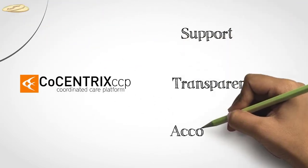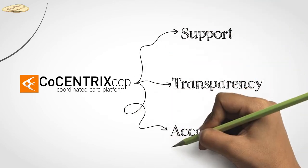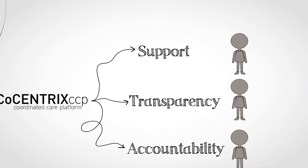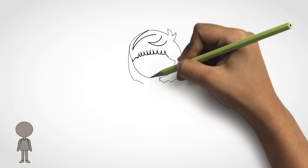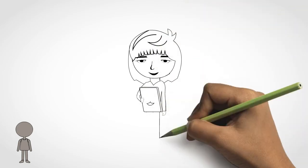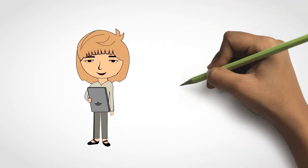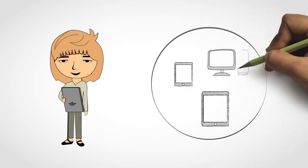transparency, and accountability among all those who contribute to Jane's care plan. Jane is also empowered to continue to reach her goals with mobile applications allowing her and her circle to monitor and adjust her plan as appropriate.